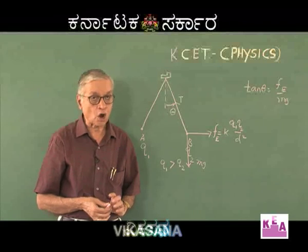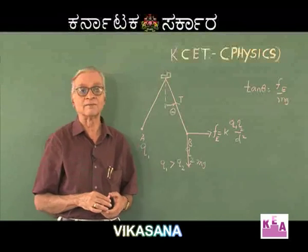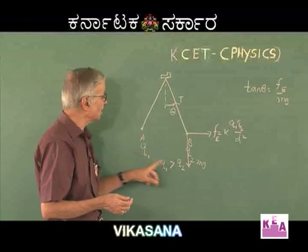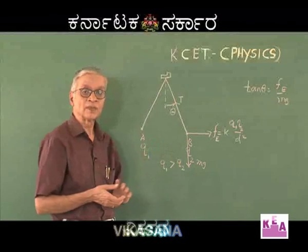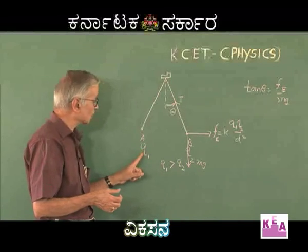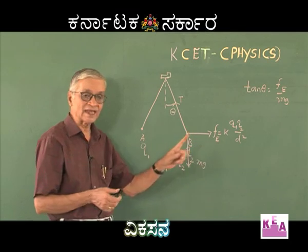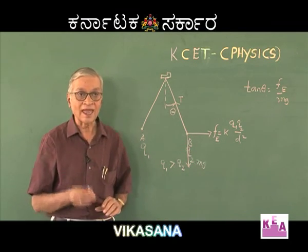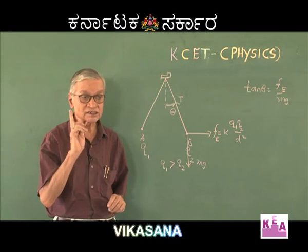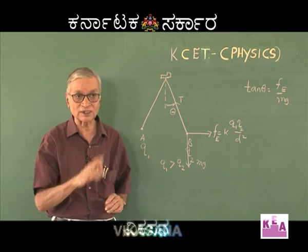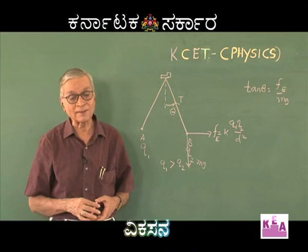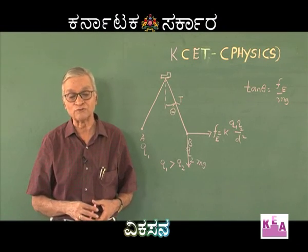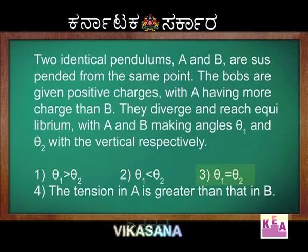I want you to note one thing. A common wrong concept is: since Q1 is greater than Q2, the electrostatic force on Q1 may be more than the electrostatic force on Q2. This is wrong, because the electrostatic force does not depend upon the individual charge — it depends on the product of the charges. If you note this point, then the third option being correct seems almost obvious.